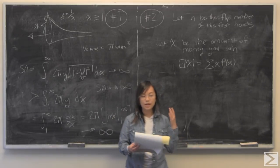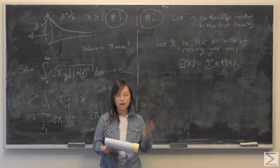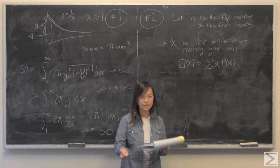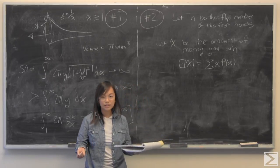You pay twenty dollars to play this game and you flip a coin. When heads shows up for the first time you get paid two to the n dollars where n is equal to however many flips it took for that head to show up. So I am going to write this in a table so it is easier to see.